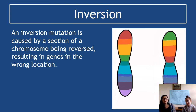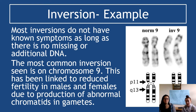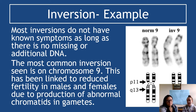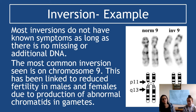Inversions tend not to have well-known common symptoms, largely because there's no missing or additional DNA to make them stand out. The most common known example is an inversion in chromosome 9, which has been linked to reduced fertility in males and females due to the production of abnormal chromatids and gametes. Inversions may actually be more common than we think — not everyone has had genetic testing, so many inversions may go undetected because they haven't been severe enough to prompt investigation.